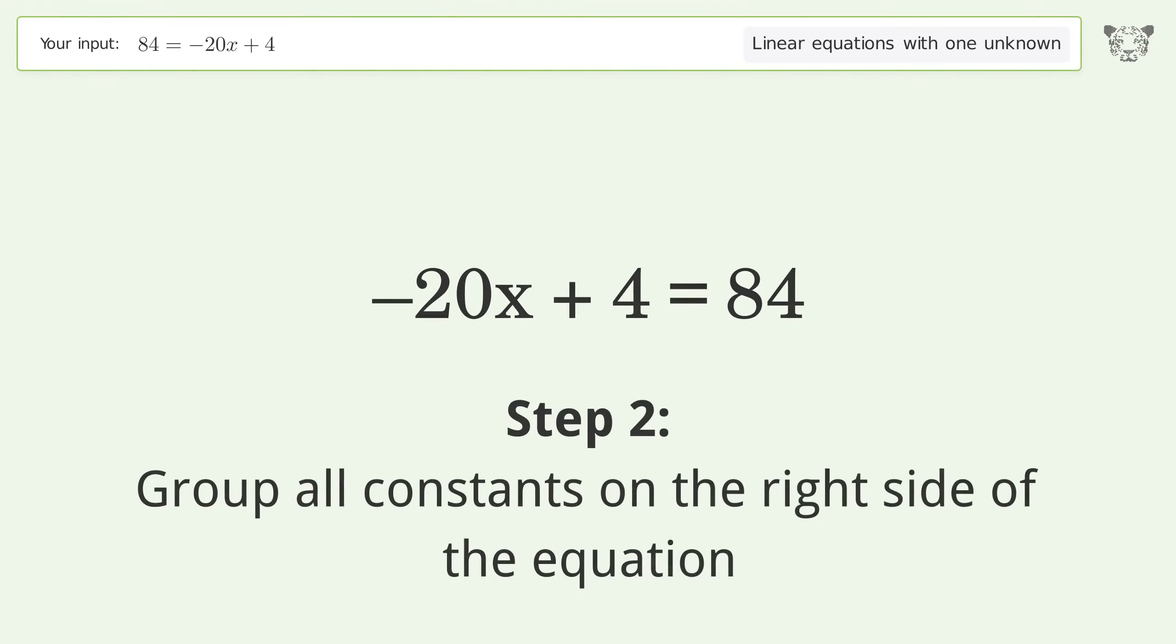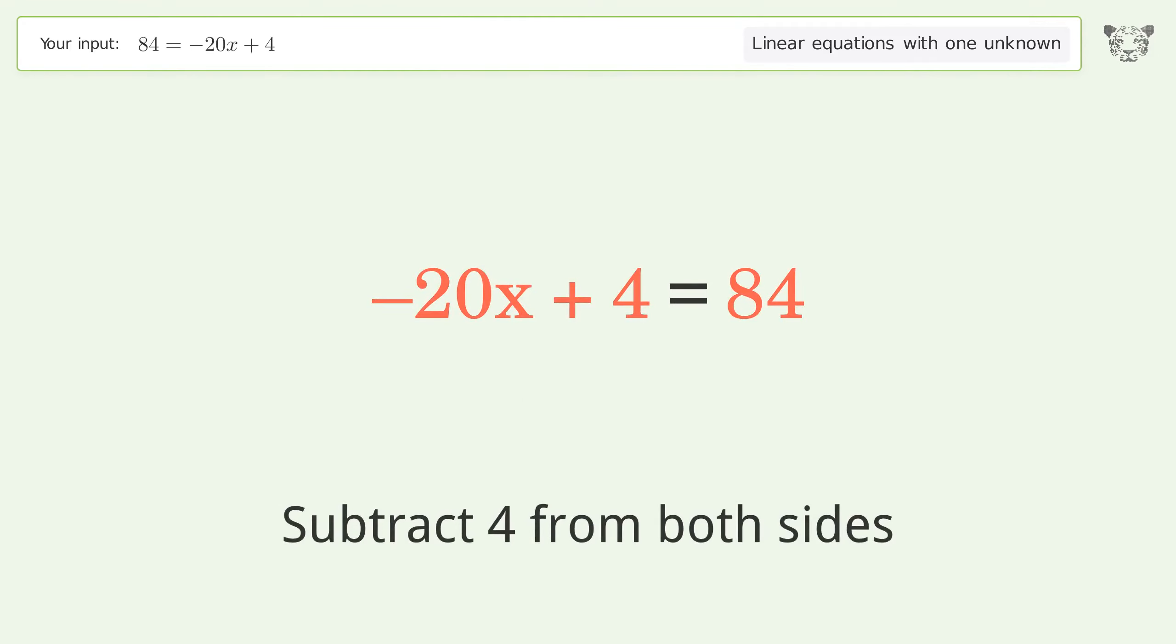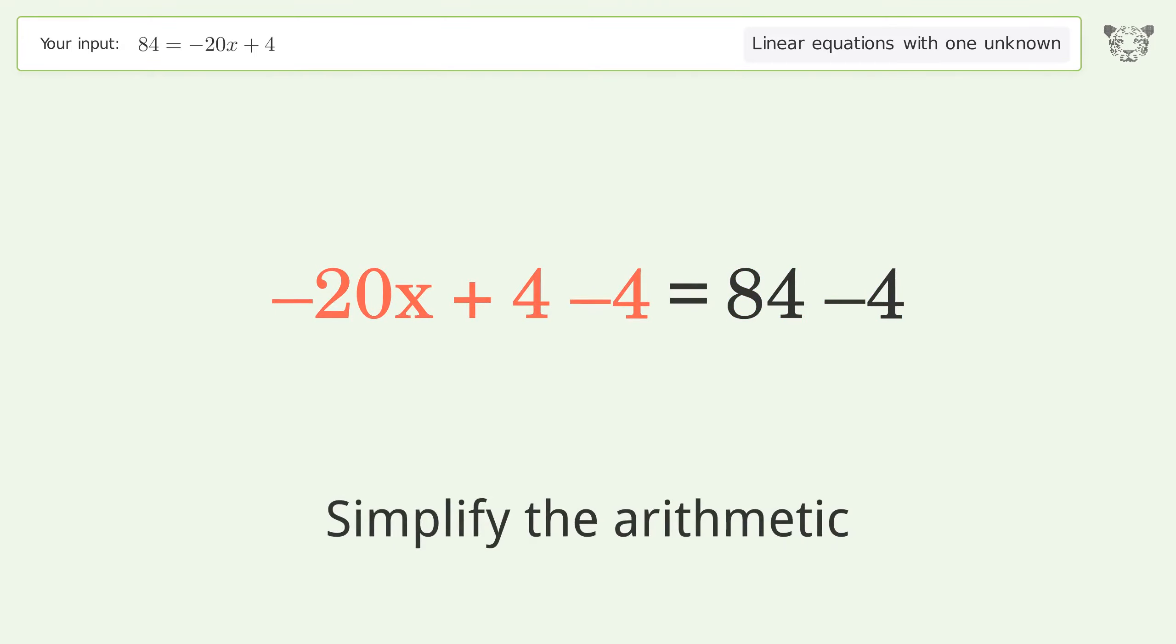Group all constants on the right side of the equation. Subtract 4 from both sides. Simplify the arithmetic.